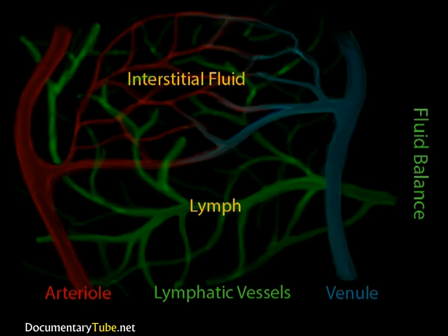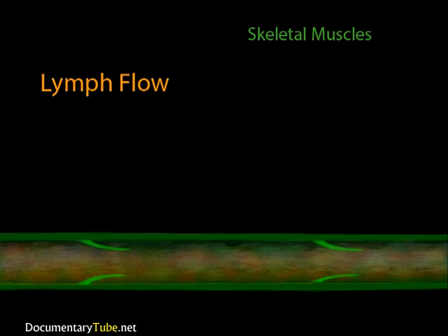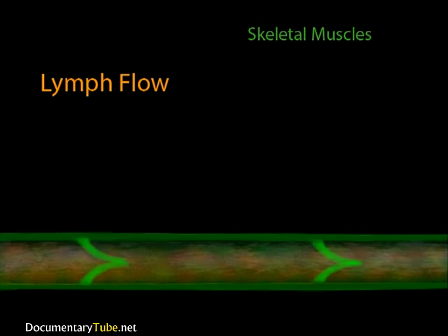How it gets the lymph there is pretty amazing. There is no heart for this system of vessels to pump the lymph around. So how does lymph get to the locations it needs to be delivered to? The lymph moves through your body when you move your skeletal muscles. The contraction of skeletal muscles squeezes the nearby lymph vessels, pumping them and pushing lymph through the vessels.